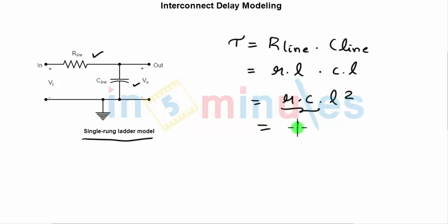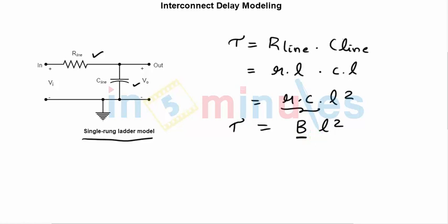If we put r·c equal to some constant B, then Tau — the delay — varies and increases with length squared. So if length is 1, and another length is 100, the delay is going to be 100 squared, with direct proportionality, assuming this constant holds. Now we want to go ahead and make a model of this.